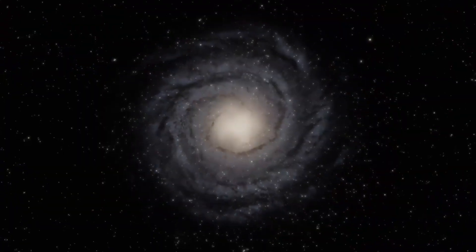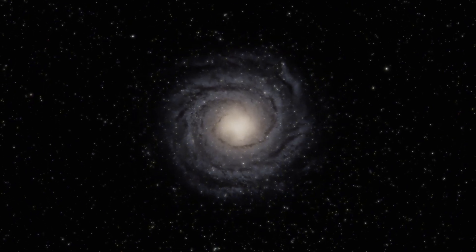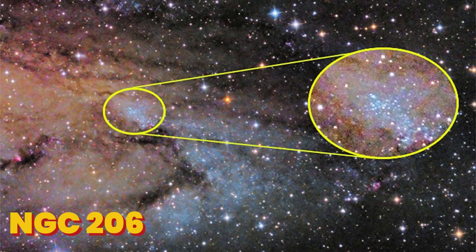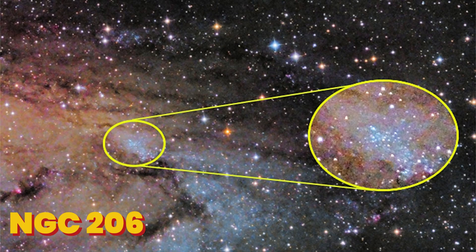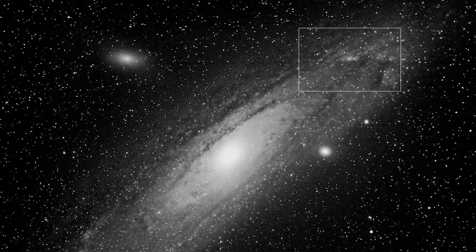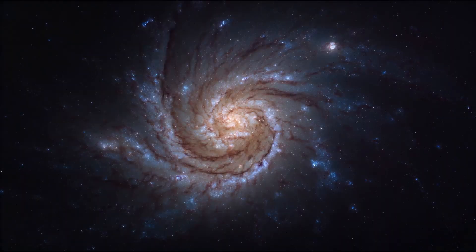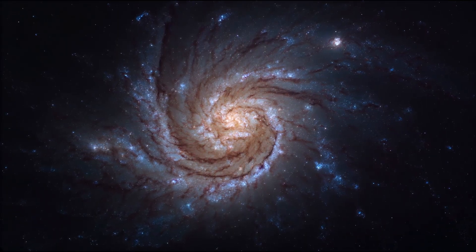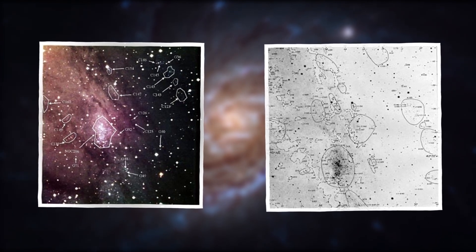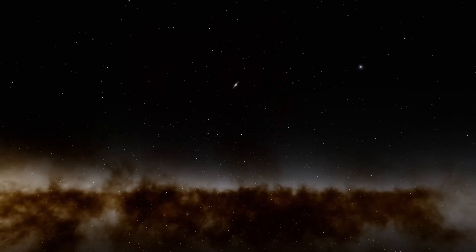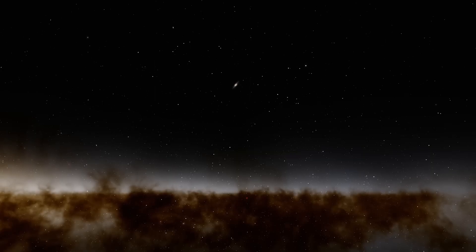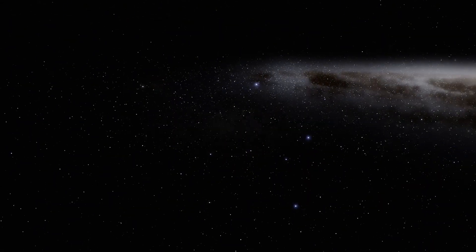Moving outward, Andromeda boasts majestic spiral arms laced with dark dust lanes and glowing star-forming regions. One famous region is NGC 206, a huge star cloud in Andromeda's southwest spiral arm. It's like Andromeda's version of our Orion Nebula, or the Tarantula Nebula, although it's much bigger. The presence of such regions shows that Andromeda is still actively forming new stars in its disk. In total, Hubble's surveys have resolved over 200 million individual stars in Andromeda's disk, a record detail for any galaxy beyond our own.